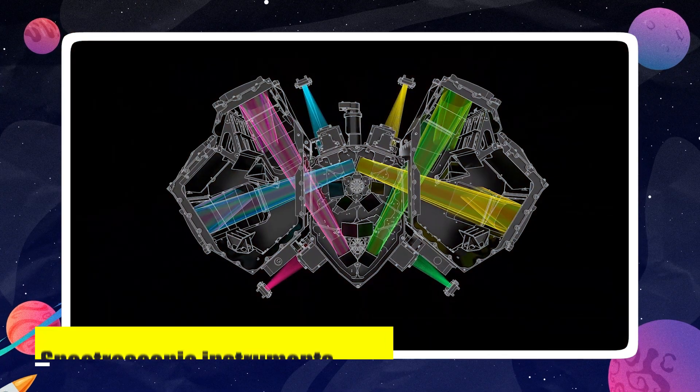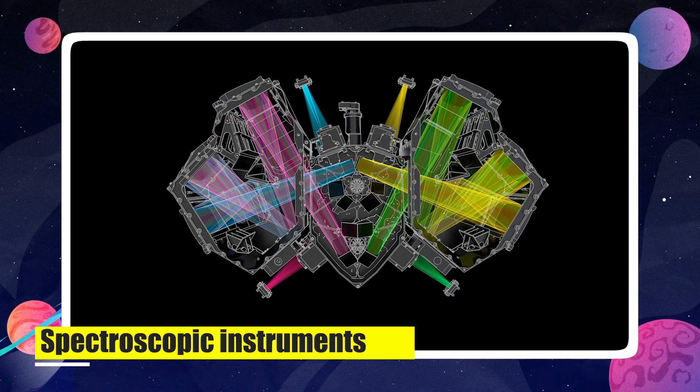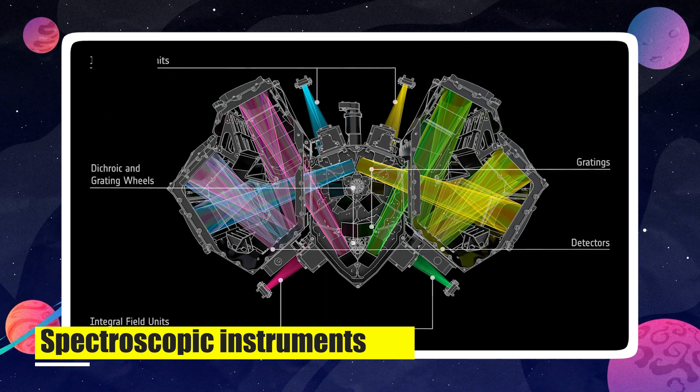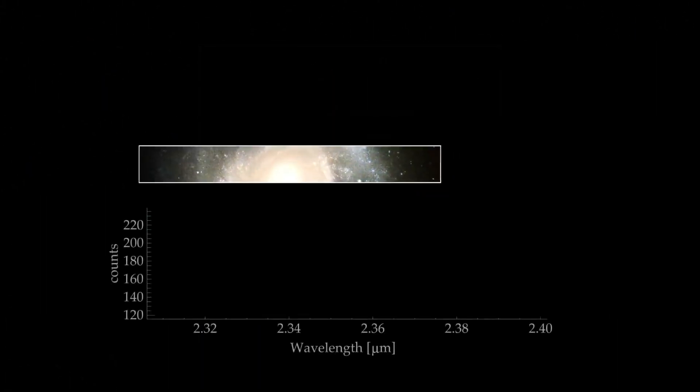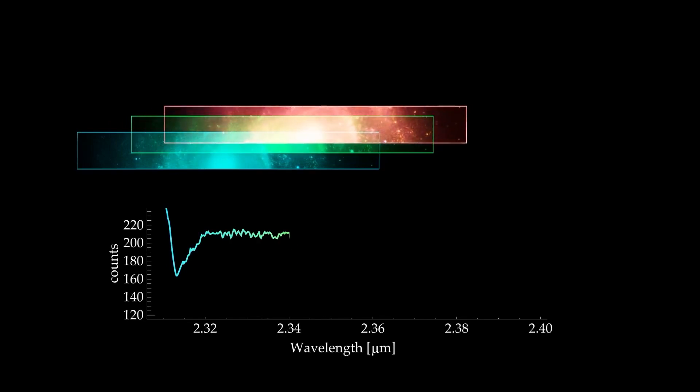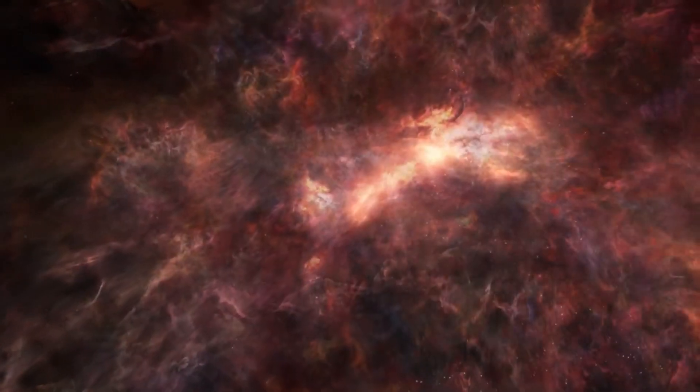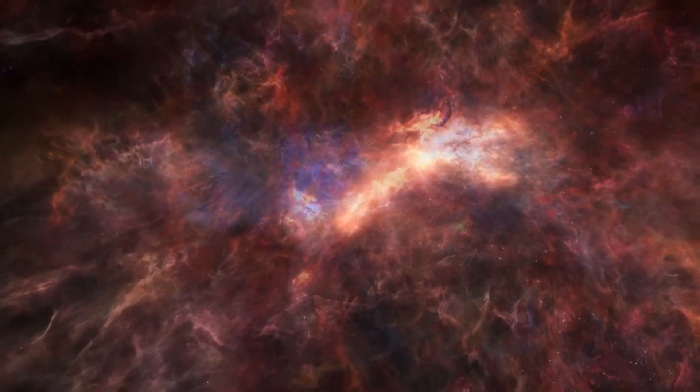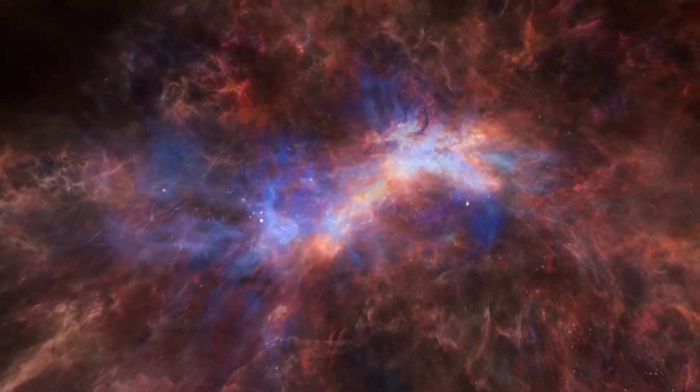Moreover, the Webb Telescope's spectroscopic instruments will enable scientists to analyze the light emitted by the filaments in fine detail. Spectroscopy, the study of the specific wavelengths of light absorbed or emitted by different elements and molecules, will allow researchers to determine the filament's chemical composition and temperature, providing a wealth of information about their origin and nature.